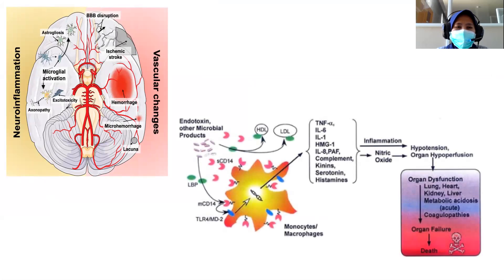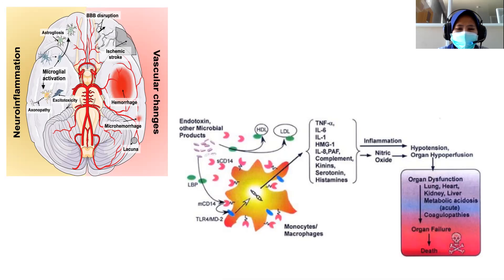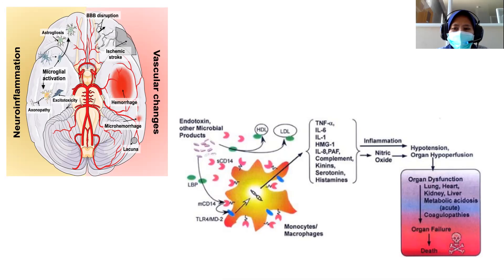We believe that neuroinflammation makes vascular changes in the brain in the setting of sepsis. It can cause blood-brain barrier disruption, ischemic stroke, hemorrhage, micro-hemorrhage, lacunar infarction, astrogliosis, and microglial activation. We also believe that endotoxin or other microbial products can increase the pathway of inflammation, causing hypotension, organ hypoperfusion, and organ failures in the lung, heart, kidney, and liver, ultimately leading to death.